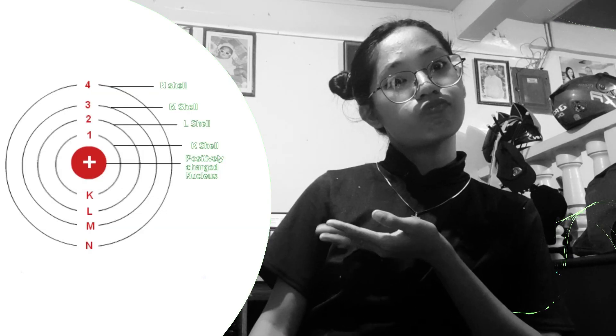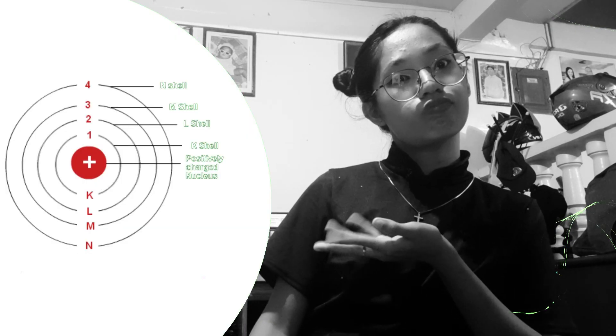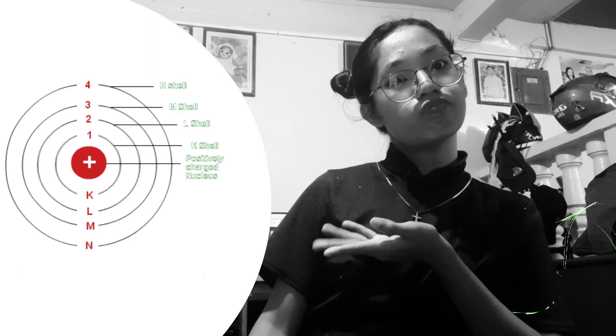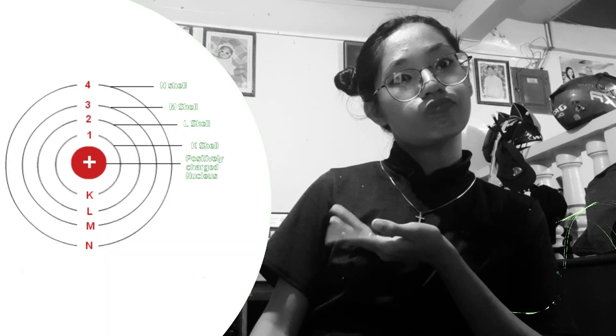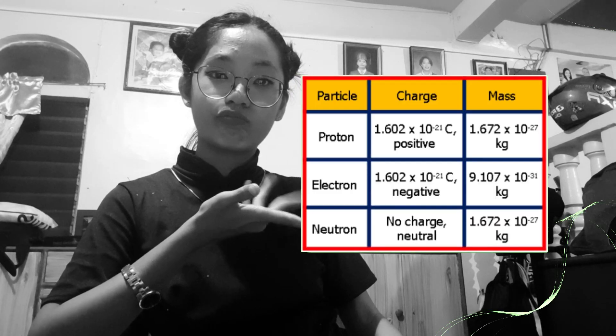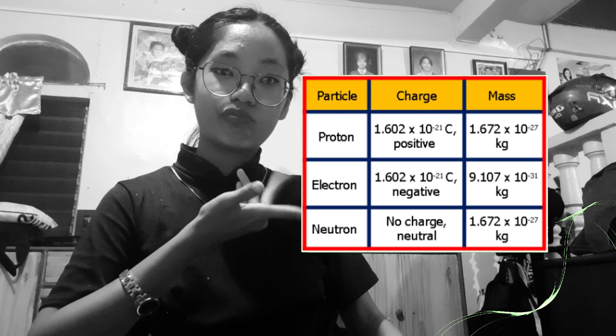A shell is an energy level or region about the nucleus in which electrons move. Atoms have five shells: the K shell (first orbit), L shell (second orbit), M shell (third orbit), N shell (fourth orbit), and O shell (fifth orbit). Valence electrons are the electrons found in the outermost shell or valence shell of an atom. A proton, electron, and neutron each have specific charge and mass values as shown in the data table.